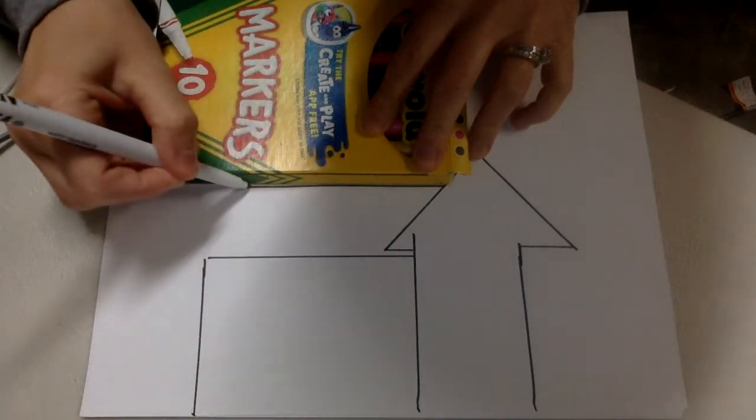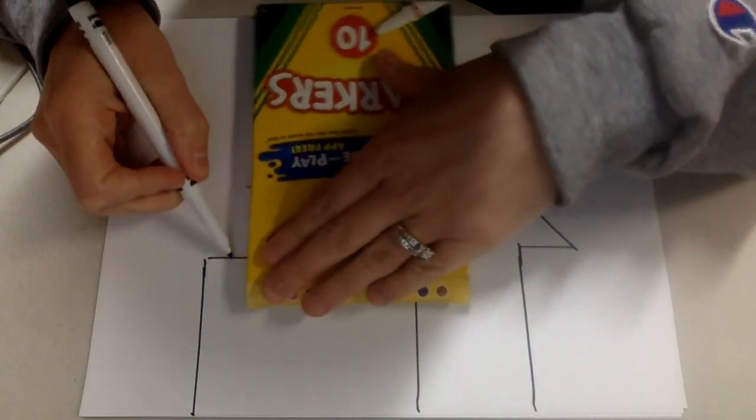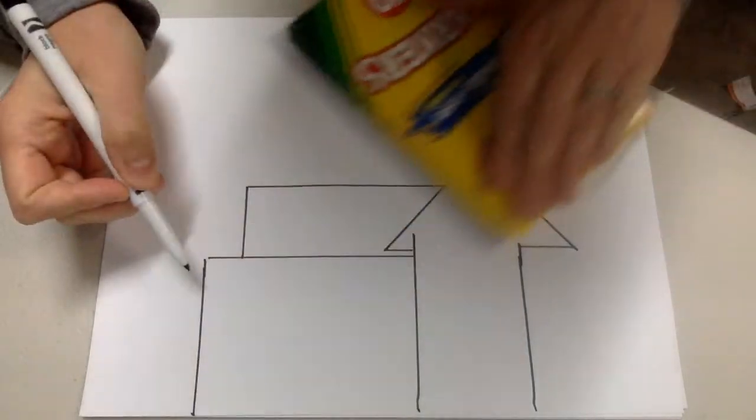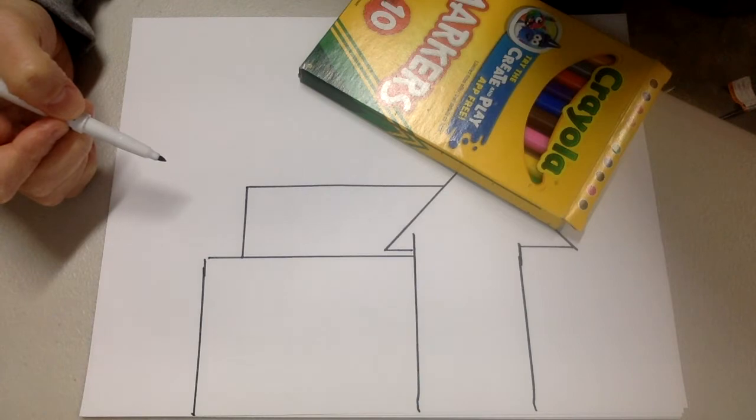So just look at the house and look at the sections and say, okay, this part, I can do that. I know how to draw a rectangle. Instead of looking at the whole thing thinking it's too hard to draw, pay attention to the sections because like I said, it's just a bunch of shapes.